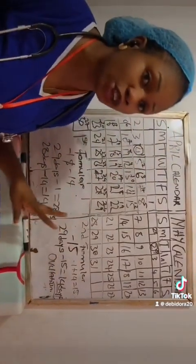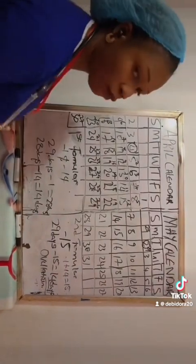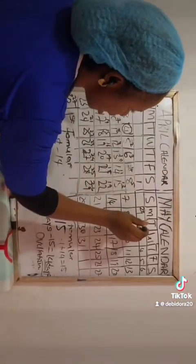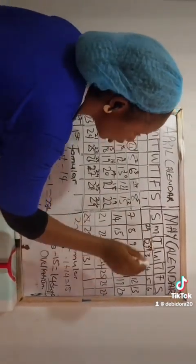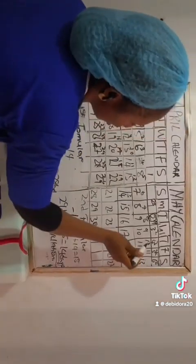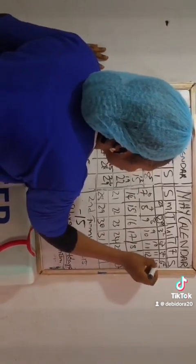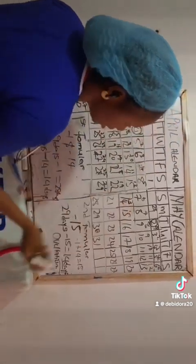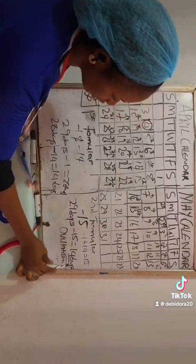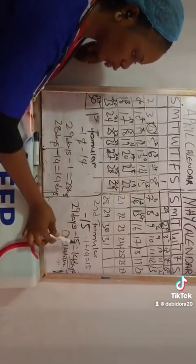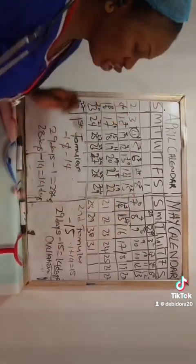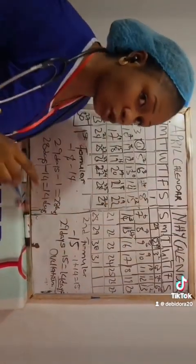These 14 days represent your ovulation day. We won't count from the day you see your period coming; we start from the day your next period starts, which is the 2nd of May. The 2nd of May is day 1, the 3rd of May is day 2, the 4th of May is day 3, continuing until the 13th of May is day 12, the 14th of May is day 13, and the 15th of May is day 14. So the 15th of May is your ovulation day.